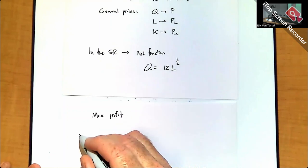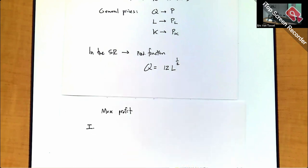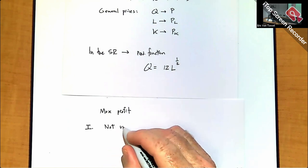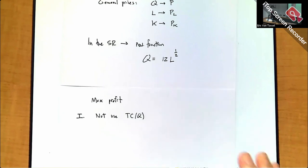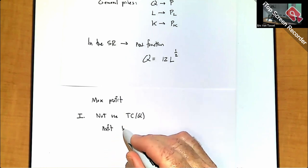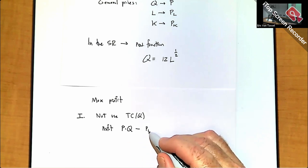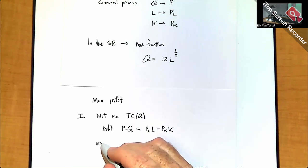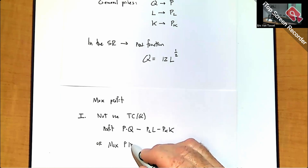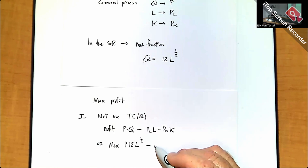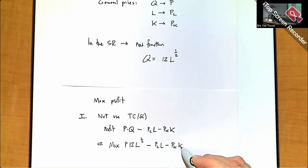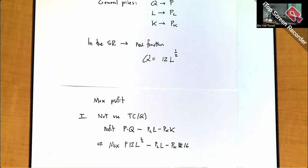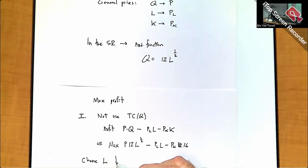One approach is to solve the problem in terms of the input without using a total cost function. This is going to be easier now because we only have one type of input. My profit is the price P times the output Q minus the cost, which is PL times L minus PK times K. I substitute the production function for Q, giving P times 12 times L to the one-half, minus PL times L, minus PK times 16.